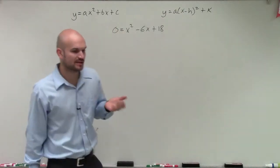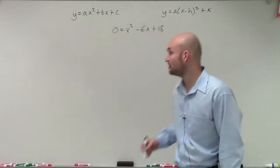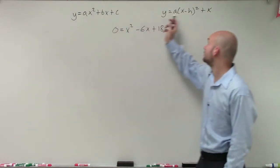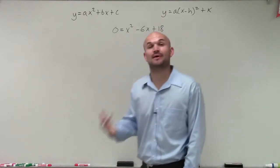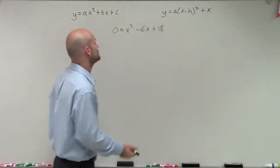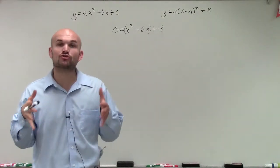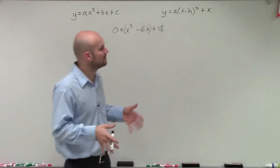There's a couple important points when completing the square that we want to make sure we're aware of. First of all, we need to make sure that our a in our equation is going to be equal to a positive 1. Then what we're going to do is put parentheses around our quadratic and our linear term, because we're going to create a perfect square trinomial.